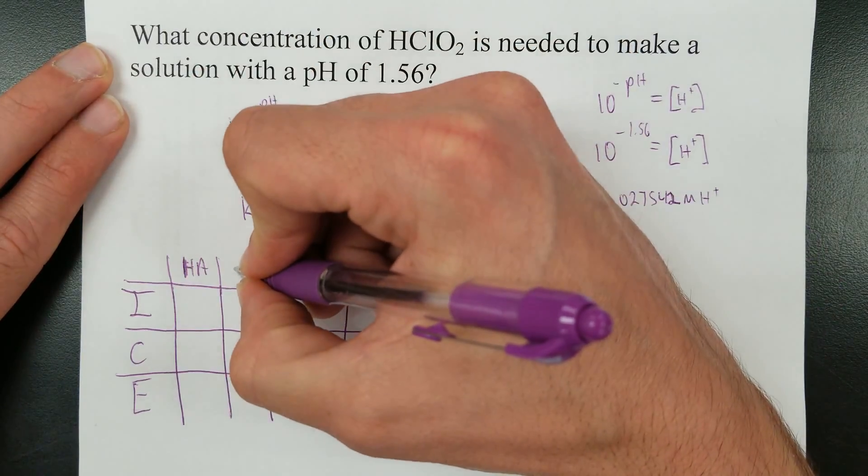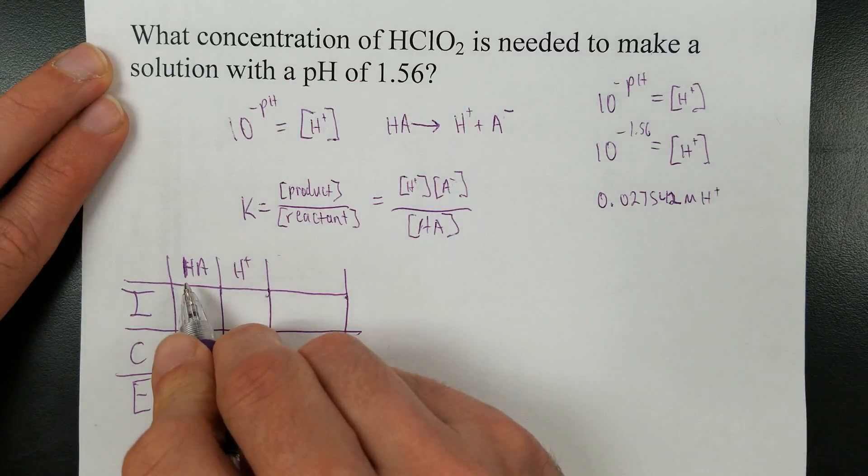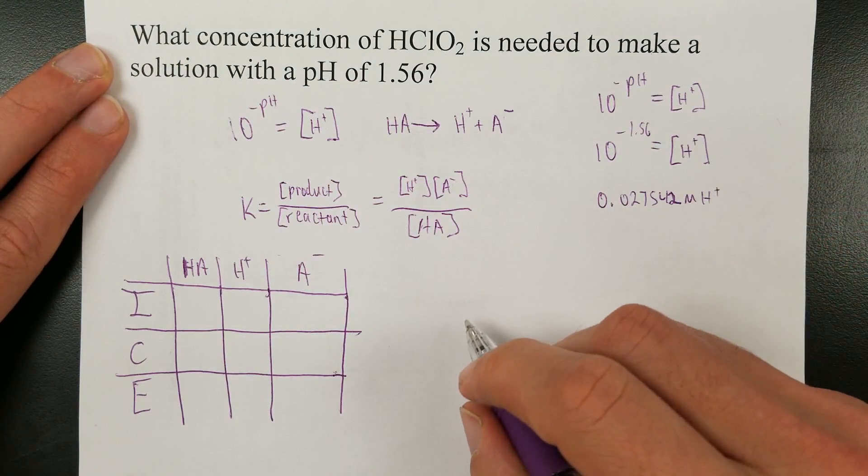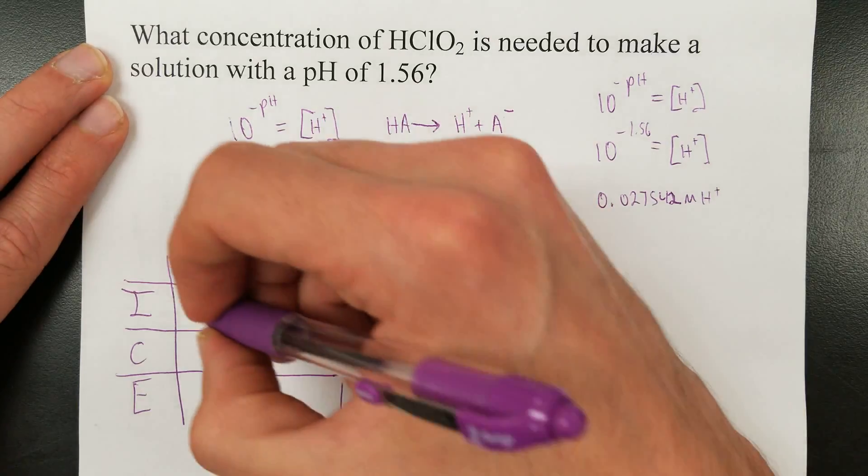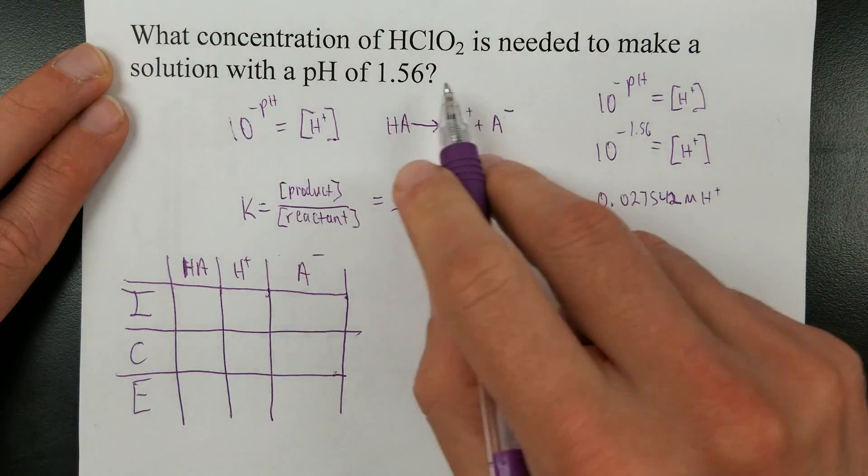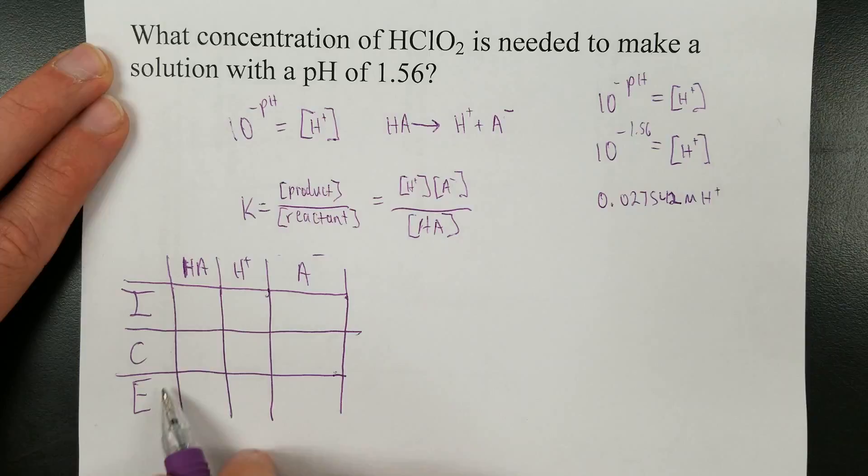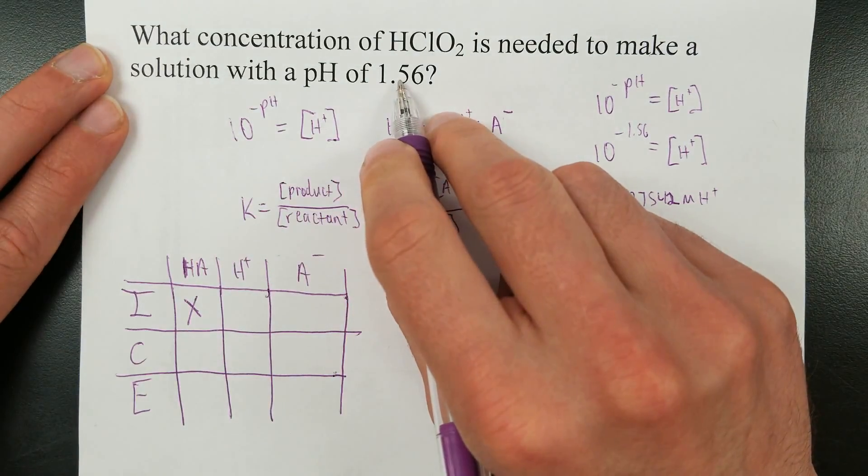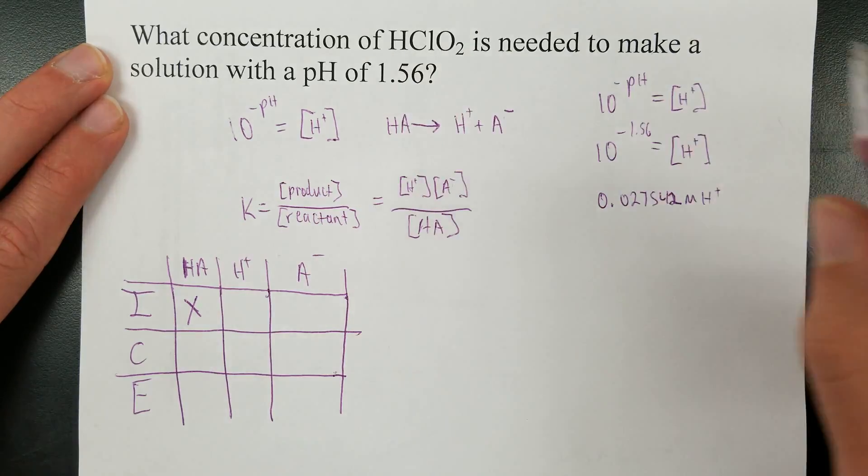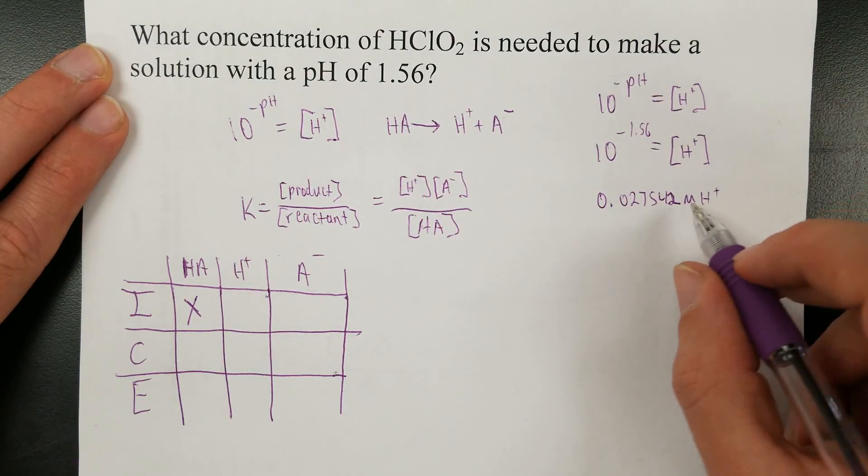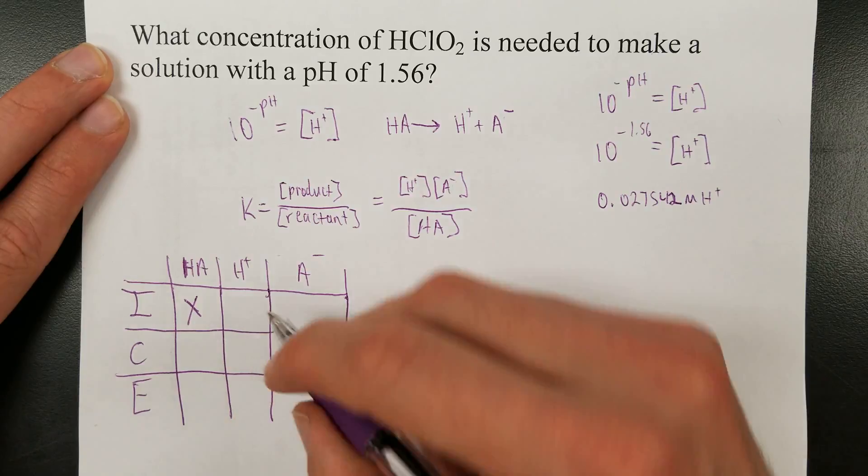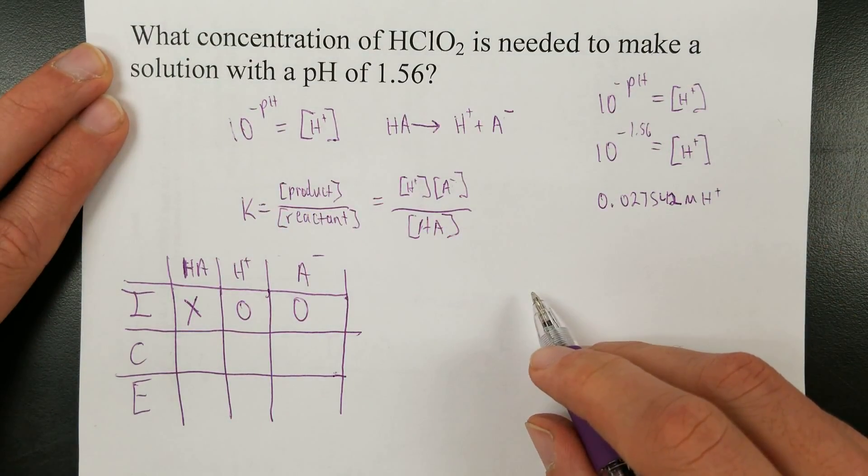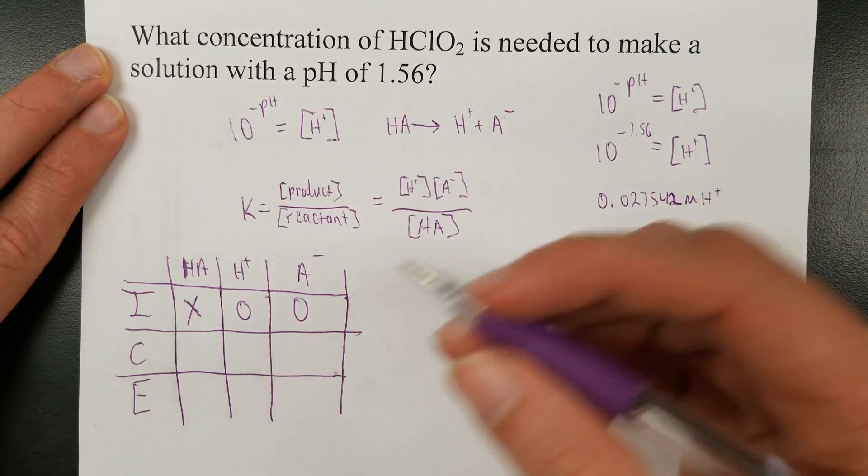So, we'll do this for HA. Sloppy H, but you get the idea. That's the reactant, and here's one of the products, here's the other products. At the beginning, you'll put in some concentration that we're trying to solve for. We're trying to find out what is the original concentration. So we want to know what initial concentration of acid would produce this pH. The hydrogen ion concentration would initially be zero when you put it in the water. And then, what's the change?